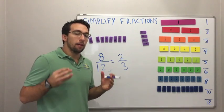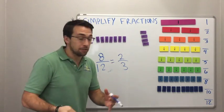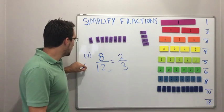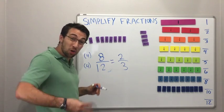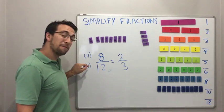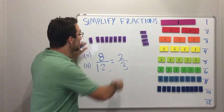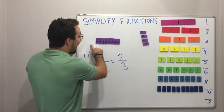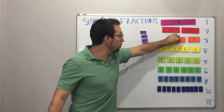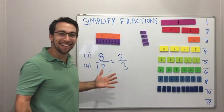Simplifying fractions necessitates that you find the greatest common factor. So check this out. 4 is a factor of 8. 4 is a factor of 12. That's the greatest common factor. Divide 8 by 4, you get 2. Divide 12 by 4, you get 3. That's amazing. So check this out. 8 twelfths equals 2 thirds. It's the same size. That's amazing.